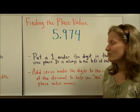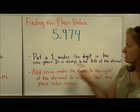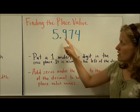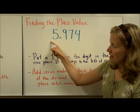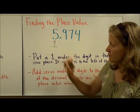So the steps are: put a one under the digit in the ones place. It's always to the left of the decimal. So find the decimal and go to the left one spot. That's always the ones place. So we're going to put a one there.